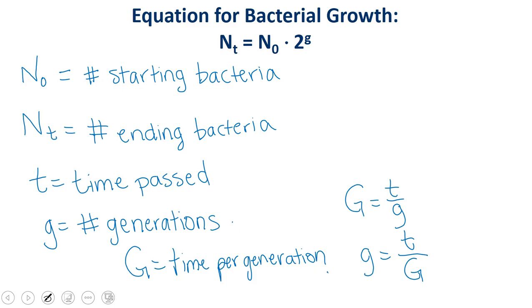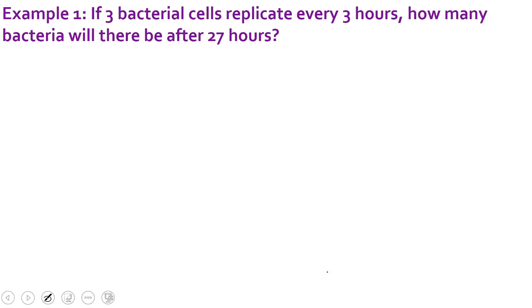Our first example is going to be this one. If three bacterial cells replicate every three hours, how many bacteria will there be after 27 hours? I want you to pause the video, try this problem, and when you've tried to figure it out, come on back and we'll do it together. All right, so hopefully you have tried this problem. Now let's work on it together. So I always start by defining my variables, and when I do, I always make sure to include units. So let's look at this problem and see what we have. Our first is our three bacterial cells. This three bacterial cells is our starting bacteria. So our N sub zero, or starting bacteria, equals three bacteria.